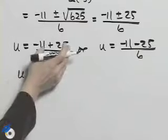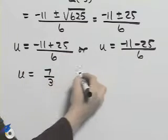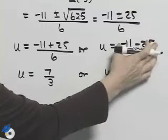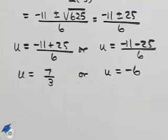Evaluating this, we'll have 14 over 6, which is 7/3, or negative 36 over 6, which is negative 6.